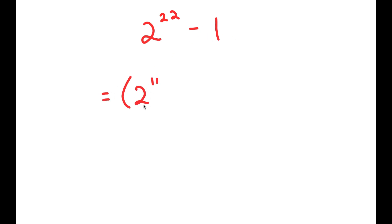So now first, we write this as 2 to the power of 11 squared minus 1 squared. And the reason I'm doing this is so I can use the property a squared minus b squared is equal to a plus b times a minus b.